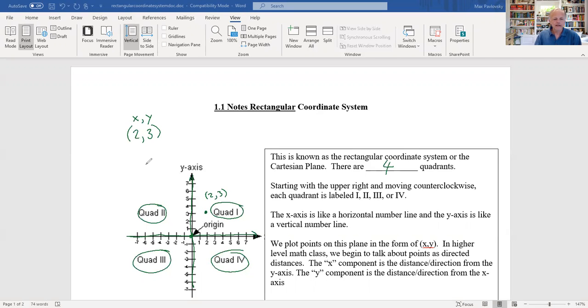And let's say another one, if I had negative two comma negative one. Now I'm going to go two to the left, starting at the origin, two to the left and one down. And so there's my point negative two, negative one.